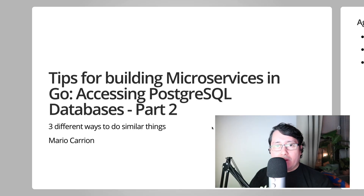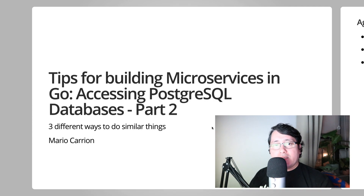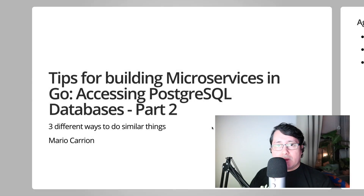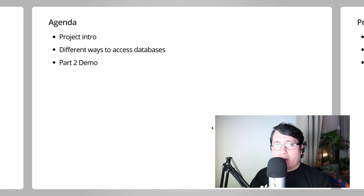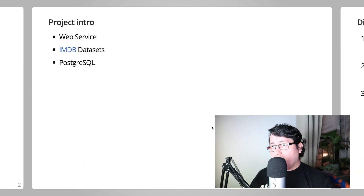Hello, my name is Mario. Welcome to another video. In today's episode I will be sharing with you another tip for building microservices in Go. This is the second part of accessing PostgreSQL databases. The agenda of this video consists of three items: a reintroduction of the project that we built last time, the three different ways that I like to categorize accessing databases, and the second part of the demo.